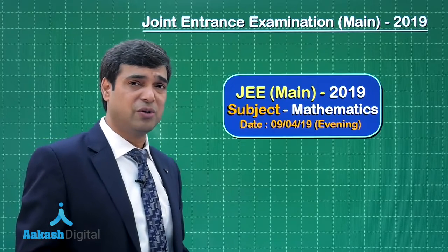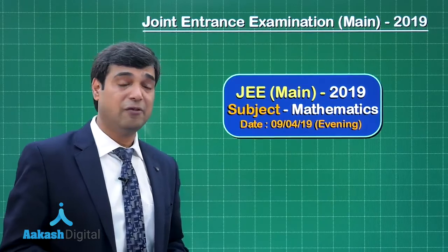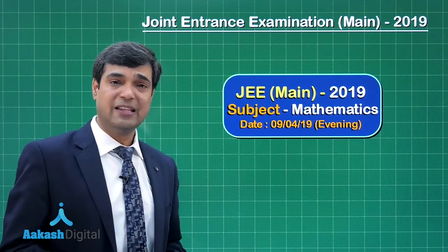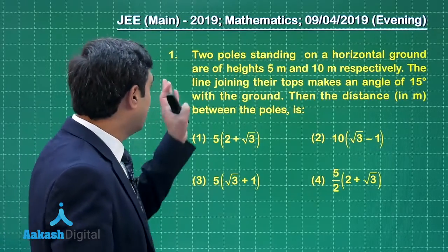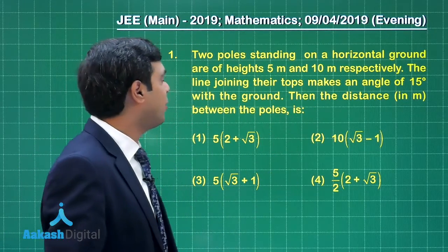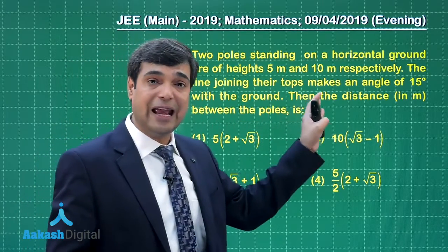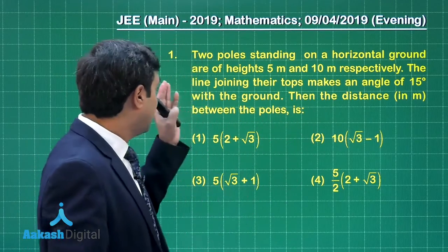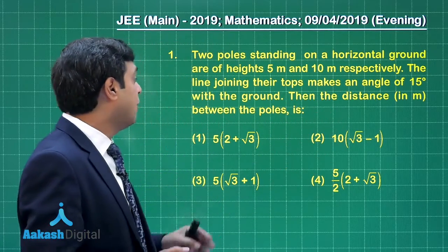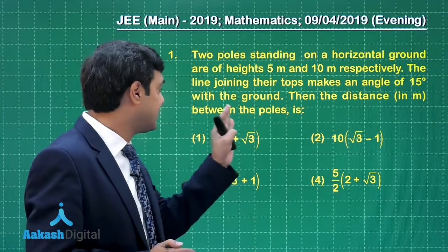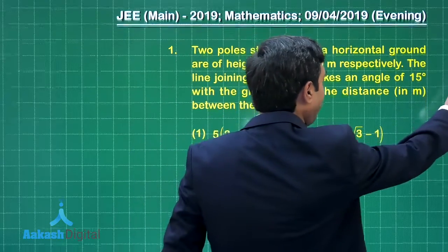Hello everyone. Today we are going to talk about JEE Main 2019 Mathematics paper which was conducted on 9th April 2019 in the evening shift. Let's begin with the first question of this paper. Two poles standing on a horizontal ground are of heights 5 meters and 10 meters respectively. The line joining their tops makes an angle of 15 degrees with the ground. We have to find the distance between the poles. This is a simple question from height and distance. Let's plan the figure.